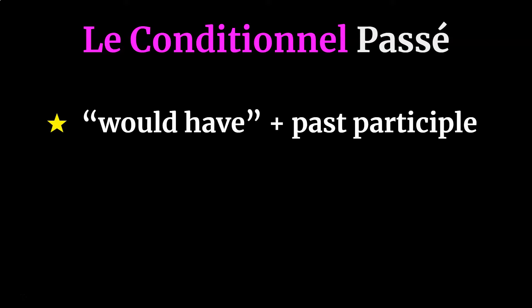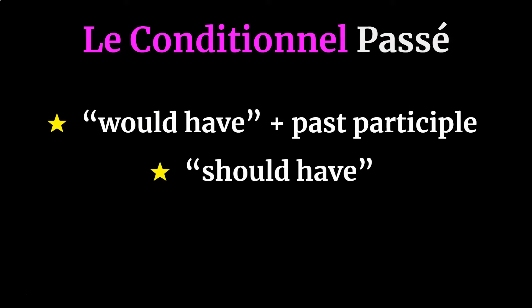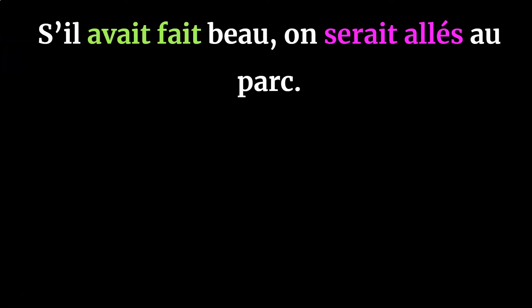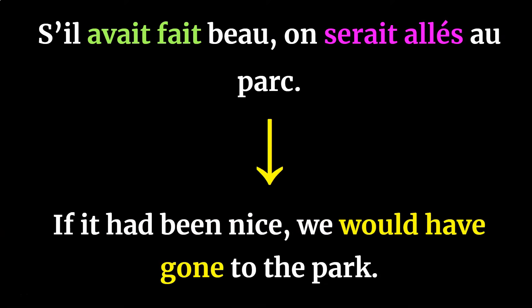Now let's move on to le conditionnel passé, the second half of the French conditional mood. Essentially, this is how you say a subject would have done something, should have done something, or could have done something. Le conditionnel passé is often used alongside le plus-que-parfait in sentences using si. For example: s'il avait fait beau, on serait allé au parc — 'if it had been nice outside, we would have gone to the park.'